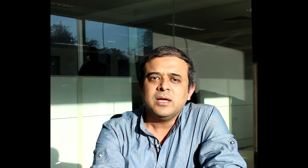Before getting to the actual disease, let me first say that classically when you deal with a genetic disease, if it's Mendelian, then you get a family, you do linkage analysis, and by that you know the region of the chromosome that is likely to harbor the gene. Then you perform something called a positional cloning approach and identify the gene in a very painstaking manner.